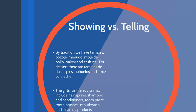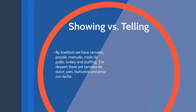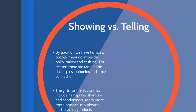I'm reminding you about showing versus telling. Look at this first example: 'By tradition, we have tamales, pozole, menudo, mole de pollo, turkey, and stuffing. For dessert, there are tamales de dulce, pies, buñuelos, and arroz con leche.' For some readers, that might start to put images in mind, but for many it's actually just a list — it doesn't really do anything in terms of being vivid or descriptive. Same thing here from a student essay: 'The gifts for the adults may include hairspray, shampoo, and conditioners, toothpaste, toothbrushes, mouthwash, and cleaning products.' This just feels like a list of stuff.